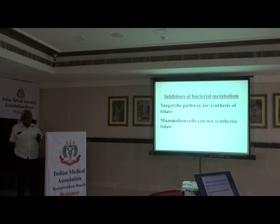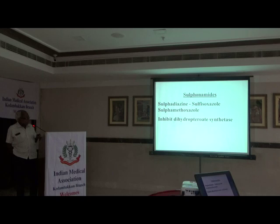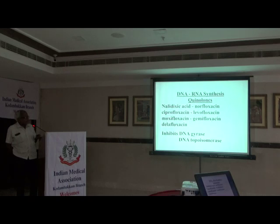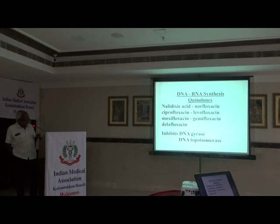Bacterial metabolic targets are many. One target is the pathogen's synthesis of folate. Mammalian cells cannot synthesize folate. Sulfonamides inhibit dihydropteroate synthase. The DNA and RNA synthesis impairment is done with fluoroquinolones, which inhibit DNA gyrase and DNA topoisomerase. All these drugs are nalidixic acid derivatives. Nalidixic acid and fluoroquinolones are extensively used, attacking DNA and RNA synthesis.